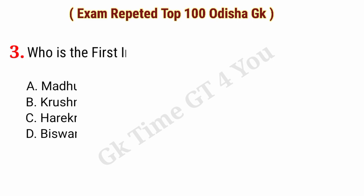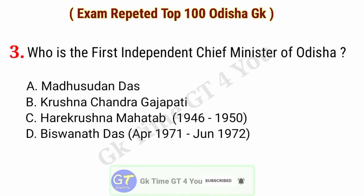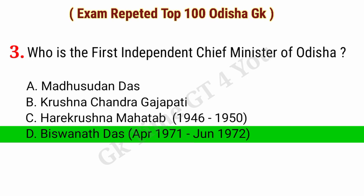Question number three: Who is the first independent chief minister of Odisha? Right answer, option D: Vishwanath Das, April 1971 – June 1972.